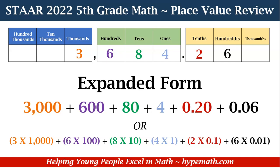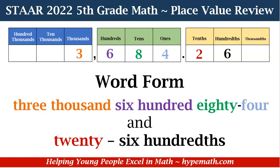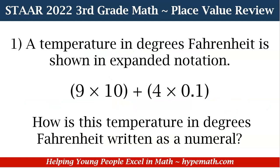Let's look at how we write it in word form — again color-coded for you to follow along. We have: three thousand six hundred eighty-four and twenty-six hundredths. We've now reviewed how to write numbers with whole numbers and decimals. Let's dive into our first problem, which is also in the workbook — the link will be in the description box.